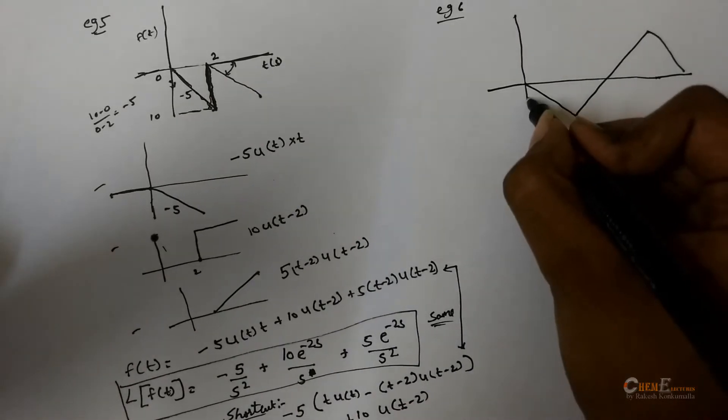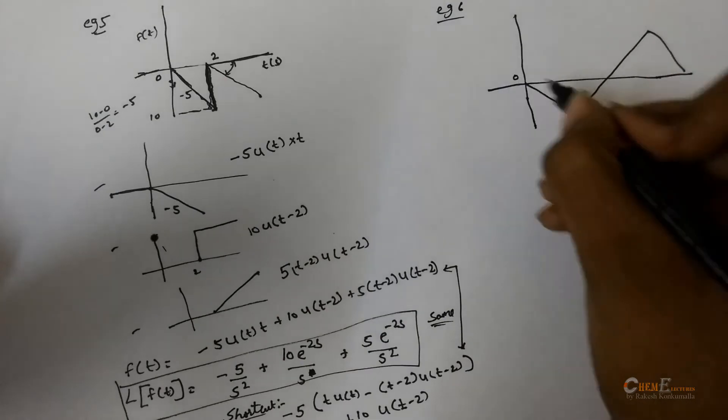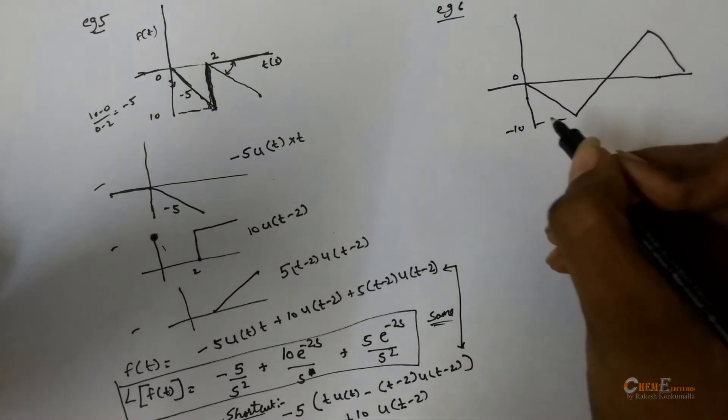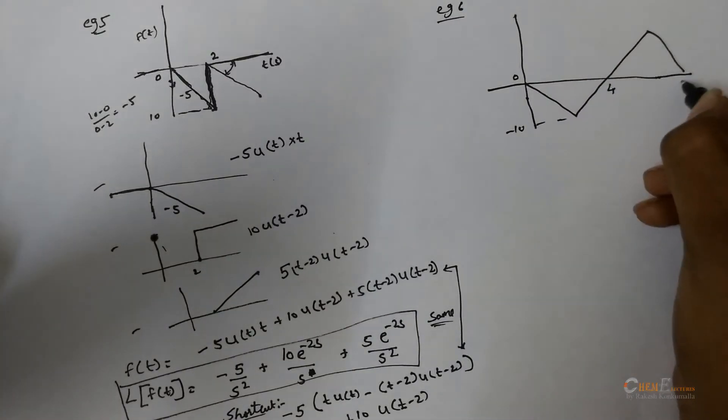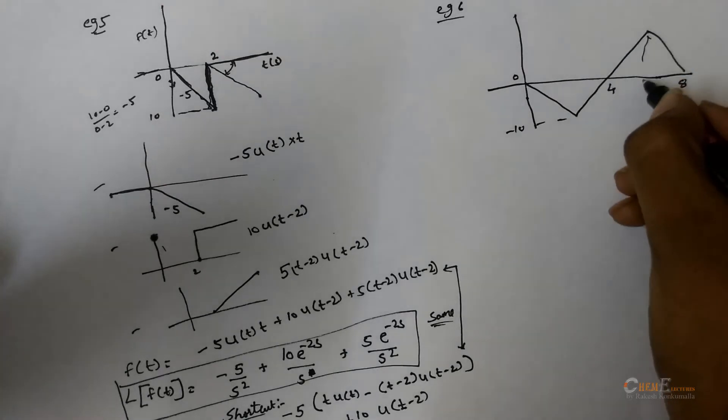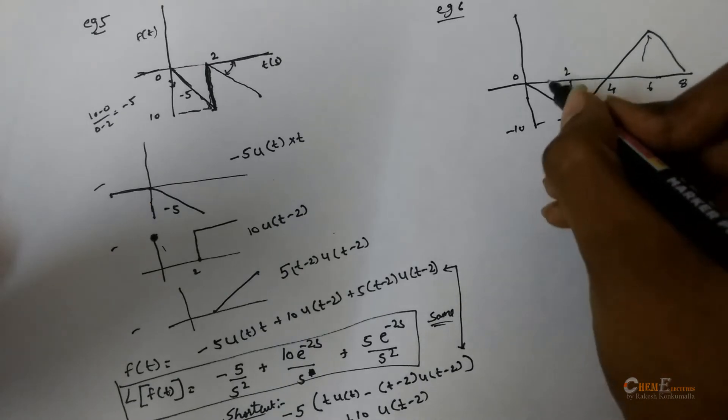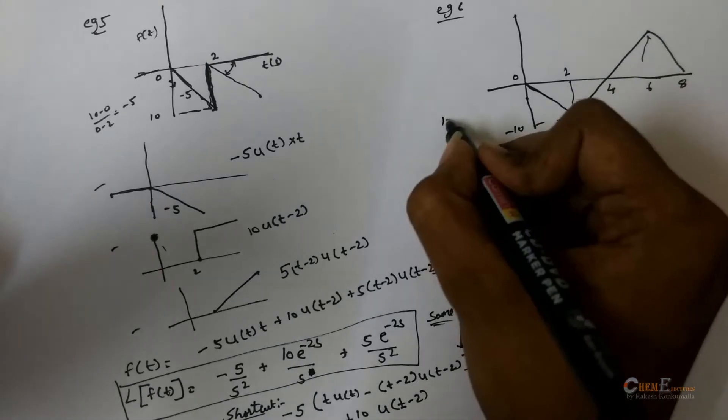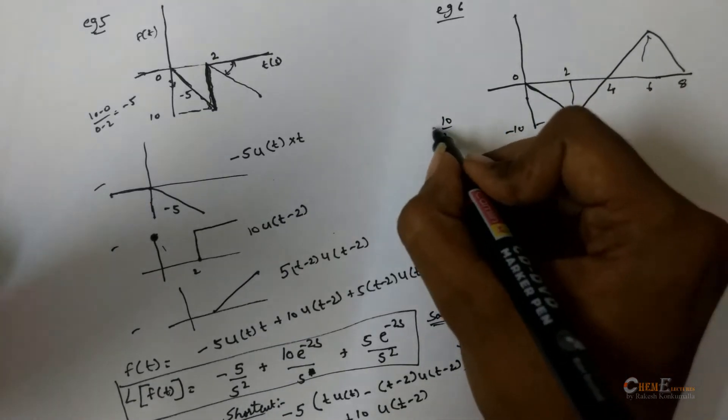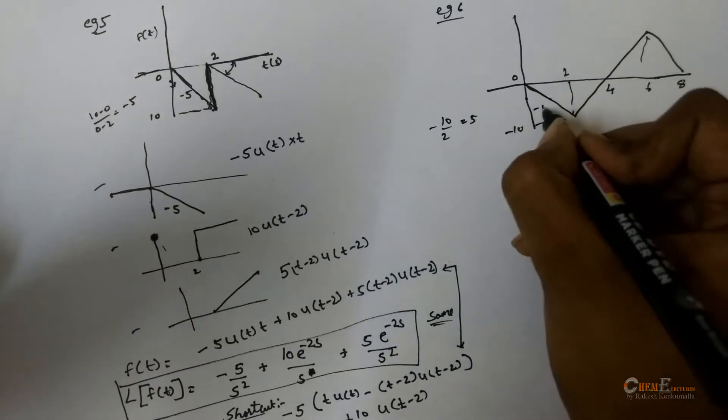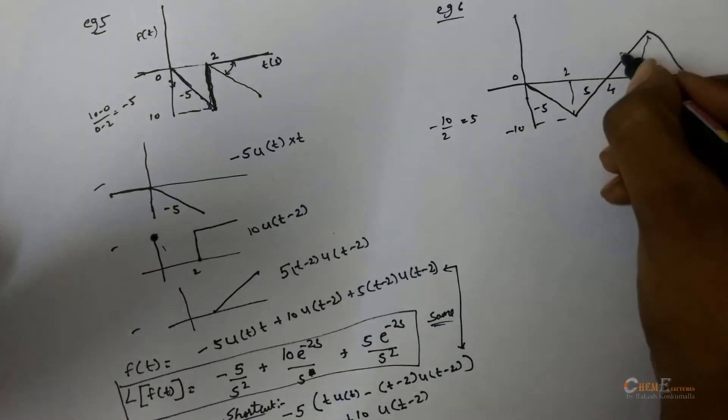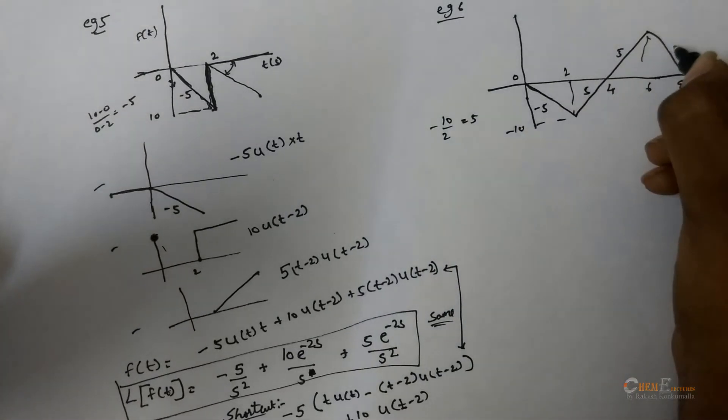Now, coming to this triangular function. It is 0, minus 10, 4, 8, the midpoint is 6 and here 2. The slope will be 10 by 2, that is 5. Minus 5, 5, 5, 5, and minus 5.